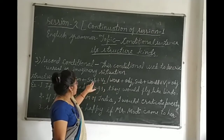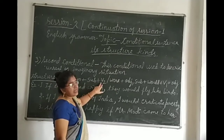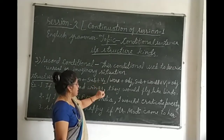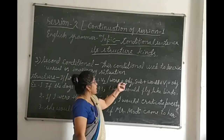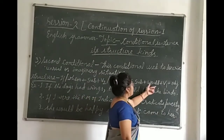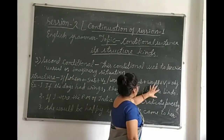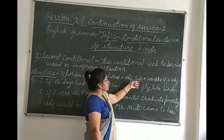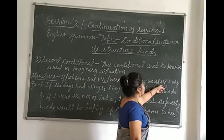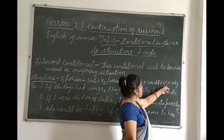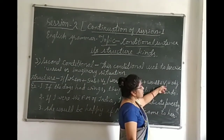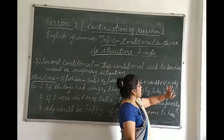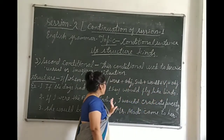The conditional sentence will use if plus past tense, and then after that the object. The second part of the conditional sentence: subject plus would plus V1 — the first form of the verb — and then we add the object.